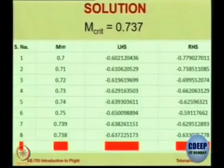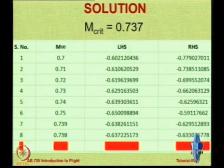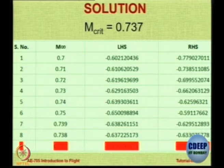The answer coming is 0.737. Right, that is the correct answer. M equal to 0.737 is the right answer. In the interest of time, please do it yourself offline. You can see the solution: we began at M = 0.737, compared LHS and RHS, and kept increasing. At M equal to 0.737, LHS and RHS match to 3 decimal places.